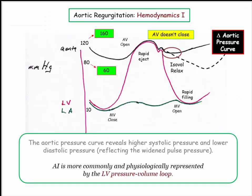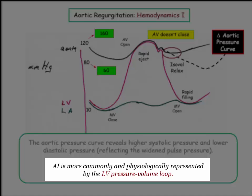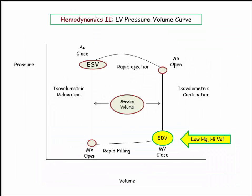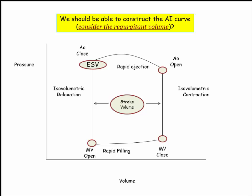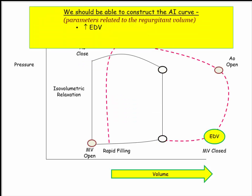When it comes to aortic regurgitation hemodynamics, you're more likely to see the LV pressure-volume loop — it has a nuttier appearance with a greater variety of confusing labels. Here is the pressure-volume loop. We like to start our assessments at end-diastolic volume as labeled. Based on our understanding of aortic insufficiency and the regurgitant volume, we can construct the aortic regurgitation curve. We know there is an increase in end-diastolic volume, so the volume curve moves along the x-axis toward higher volumes.